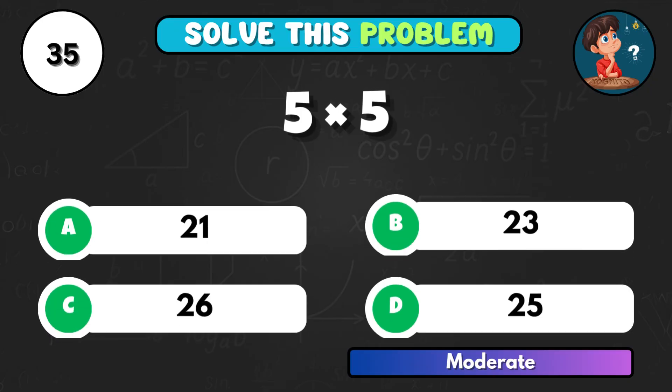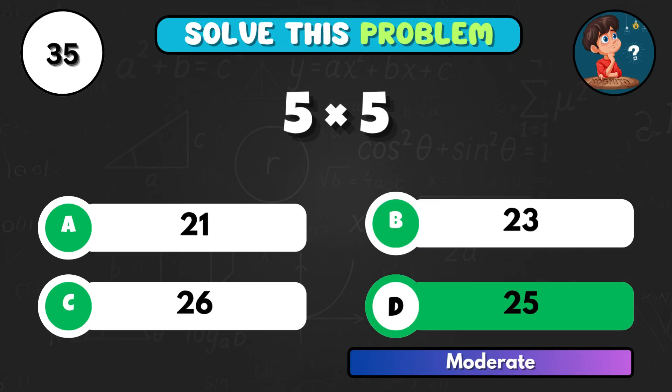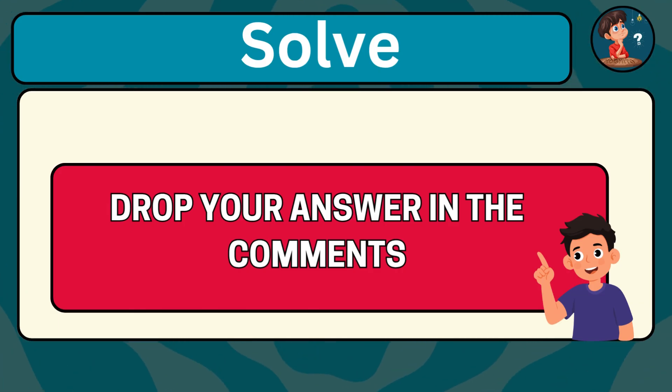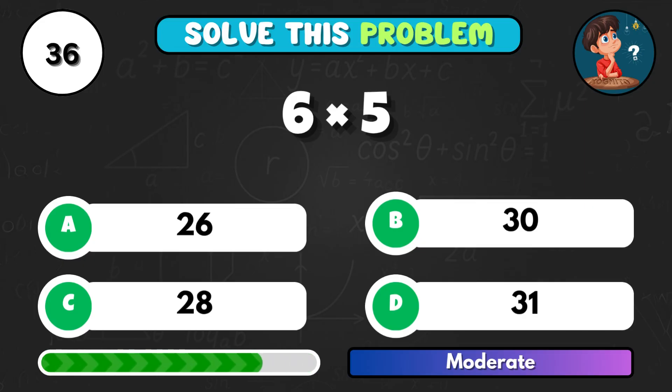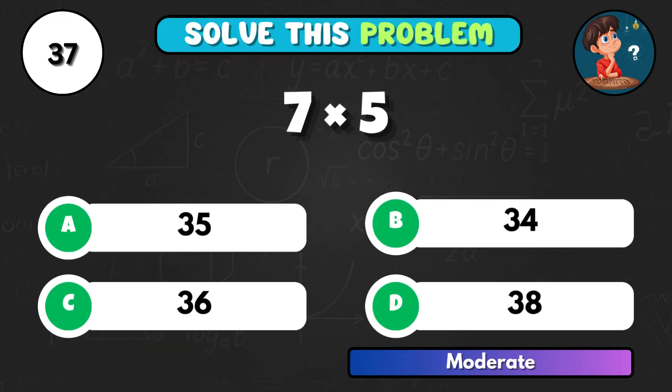5 times 5, what's your answer? Correct letter D equals 25. There are 3 groups of 3 apples. Can you write the multiplication equation and solve it? 6 times 5, can you solve it? Option B, total 30. 7 multiplied by 5, what do you get? That's A equals 35.